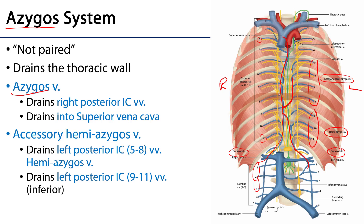The higher intercostal spaces — intercostal spaces one and two — can feed into either the brachiocephalic veins or sometimes into the vicinity of the venous angle; there is a lot of variation there. There is a lot of variation throughout the azygous system, so if you were to look at ten different anatomical donors you might see ten different variants. This is the classical interpretation of the azygous system.